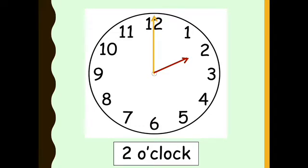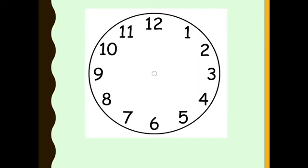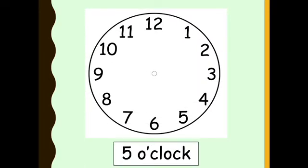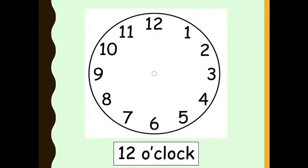Let's have a look at a couple more. Have a go at this one now. This one reads 5 o'clock — the big hand goes on 12 and the small hand goes on 5. The next one is 12 o'clock. The big hand goes on 12 and the small hand also goes on 12. This reads 12 o'clock.